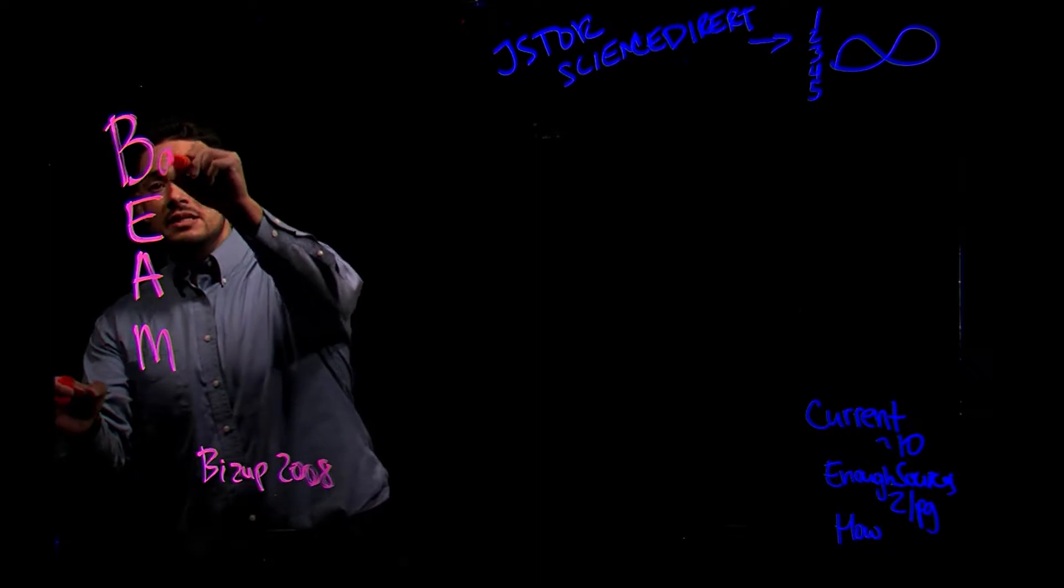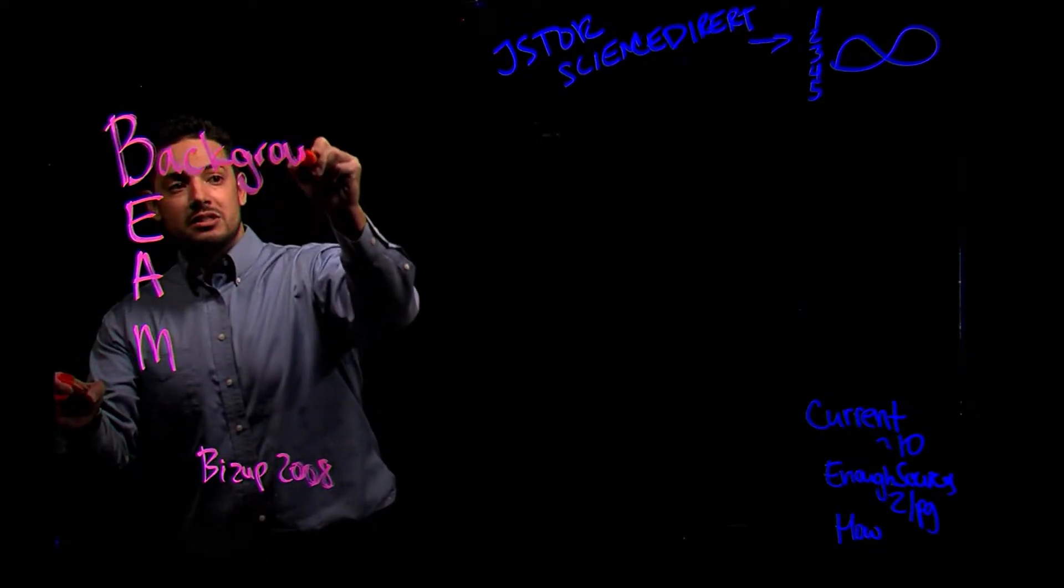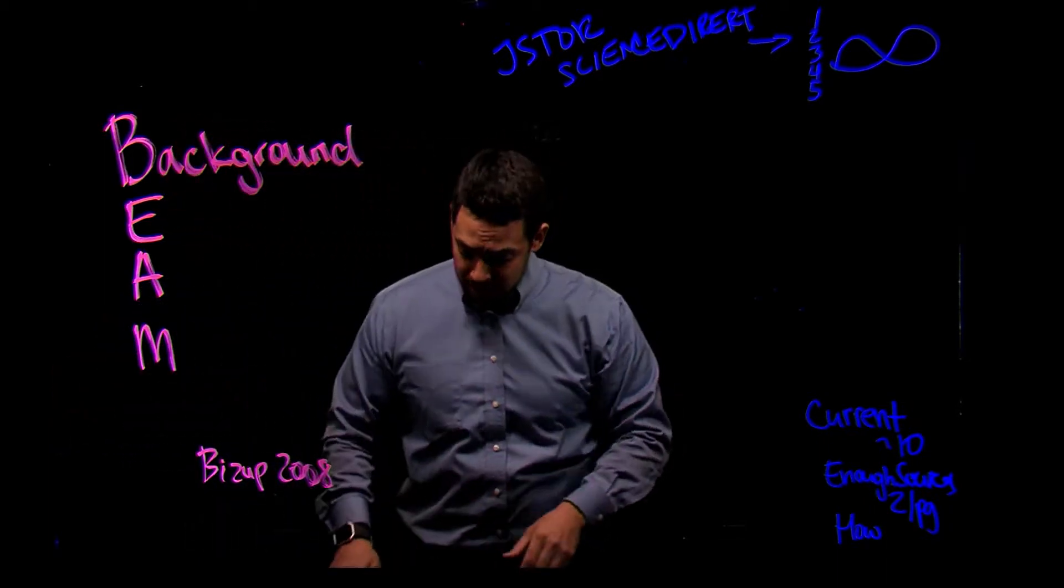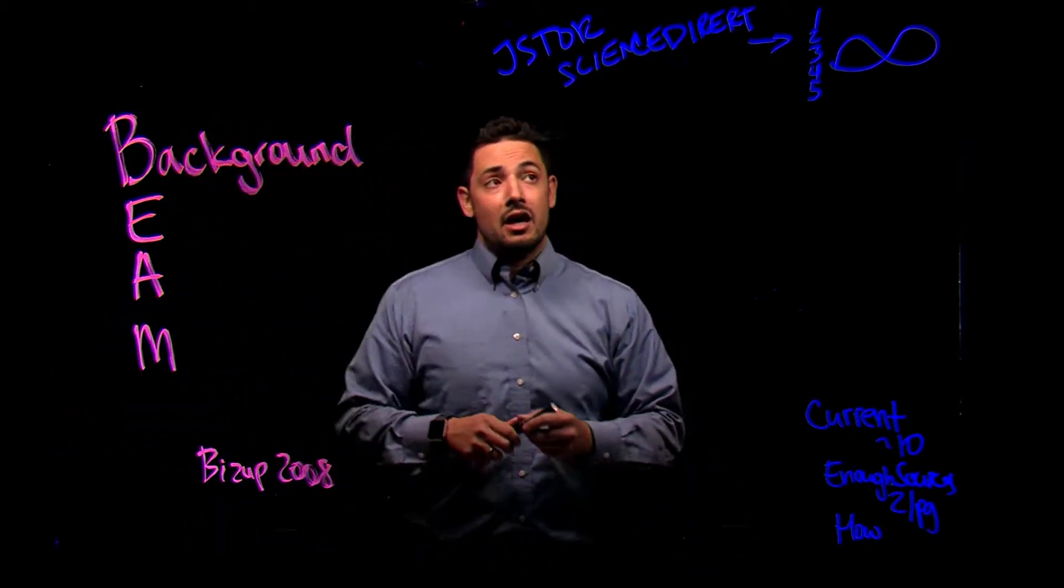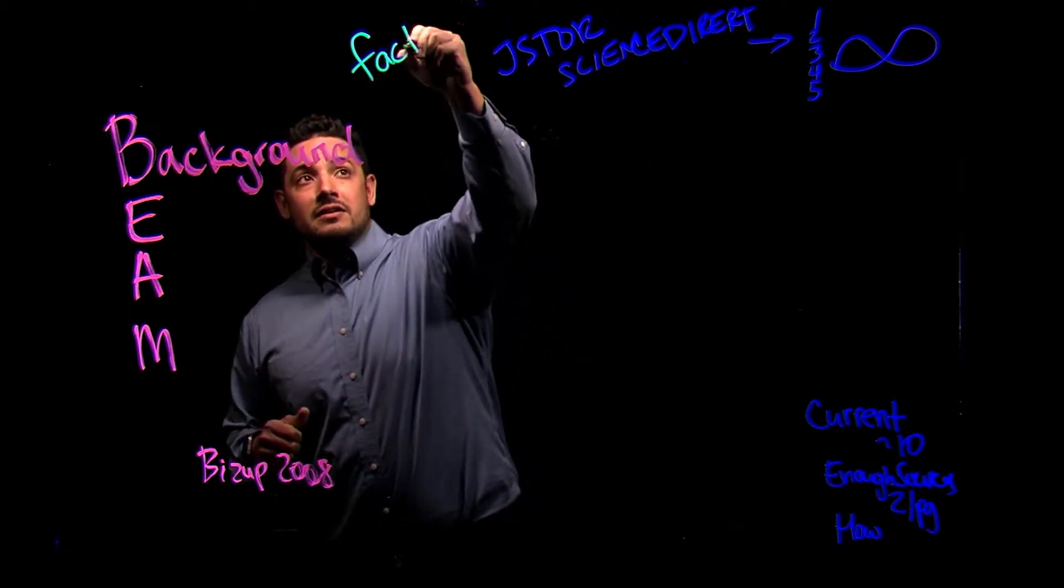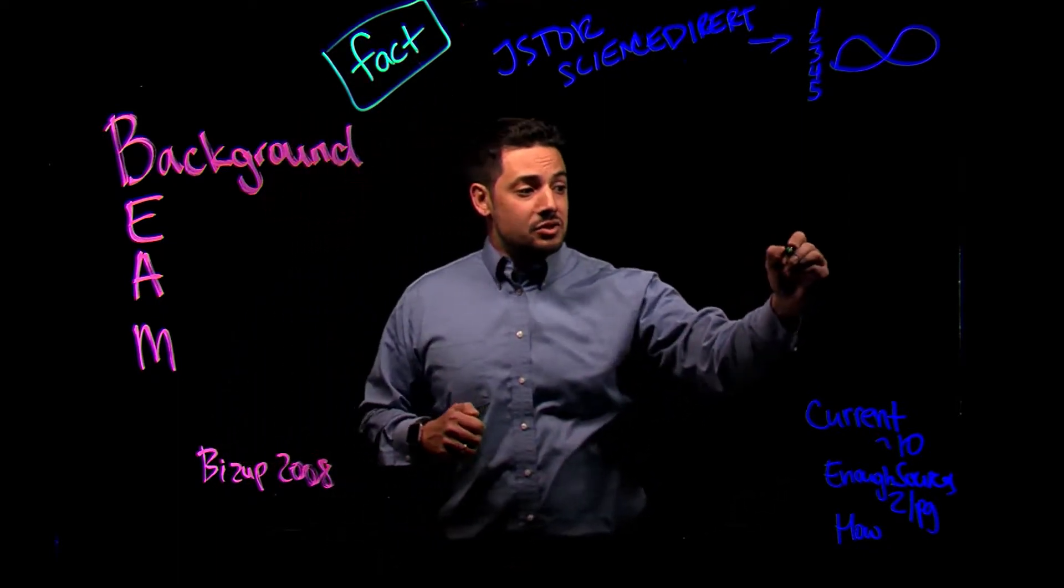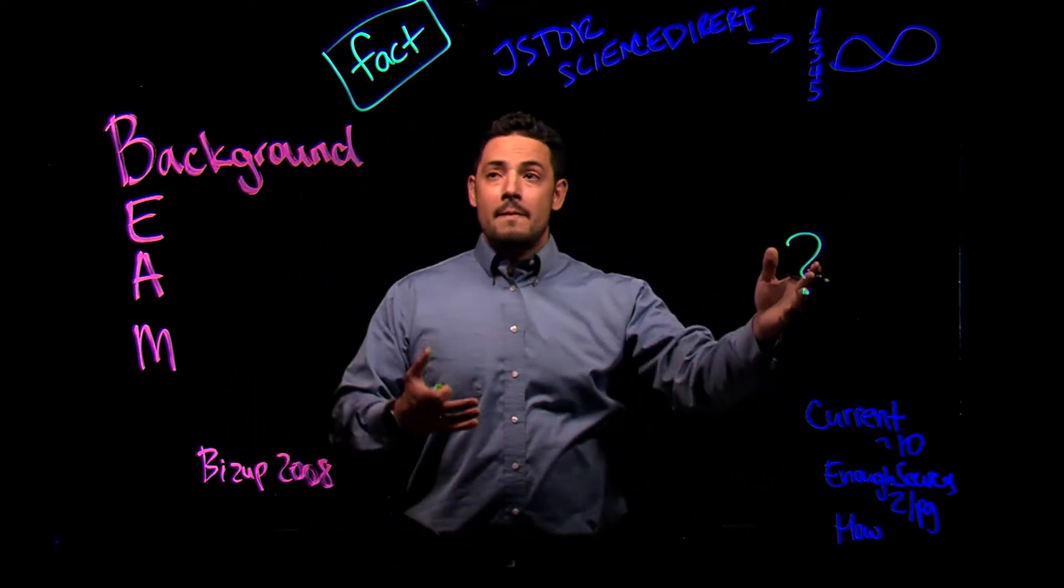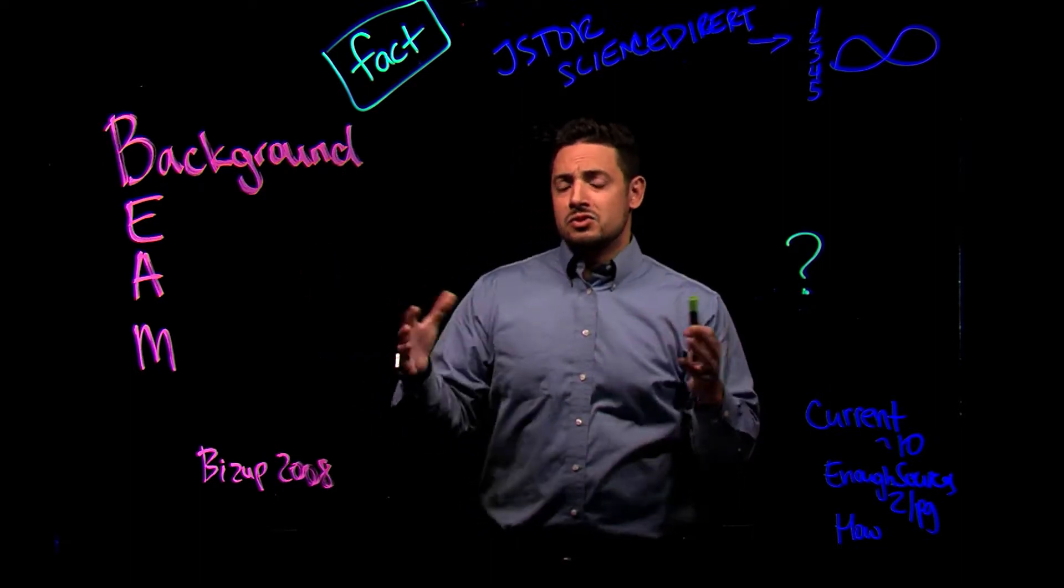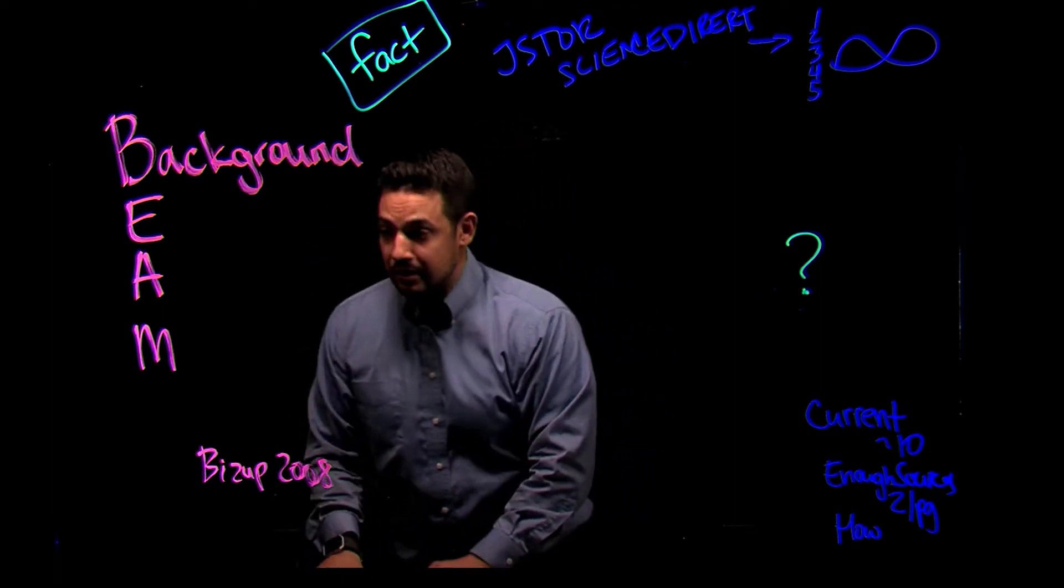To start off, the B stands for background. Now, a background source is any source that the writer or the researcher is asking the audience to think of as fact. So, when the researcher has their research question over here, they're going to have a somewhat authoritative source that they look at and think, this provides a good way of thinking about that topic.